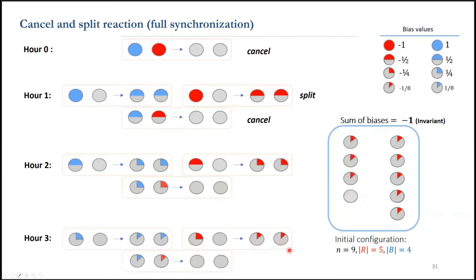With this protocol, the red agents eventually consume the blue ones, and the population converge to the majority. To give you some intuition, note that the cancel reaction goal